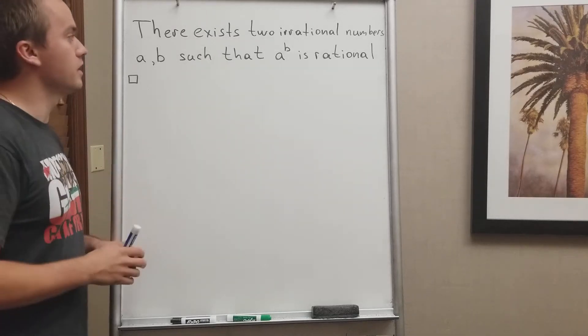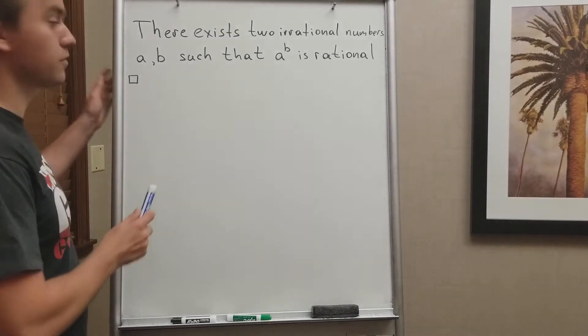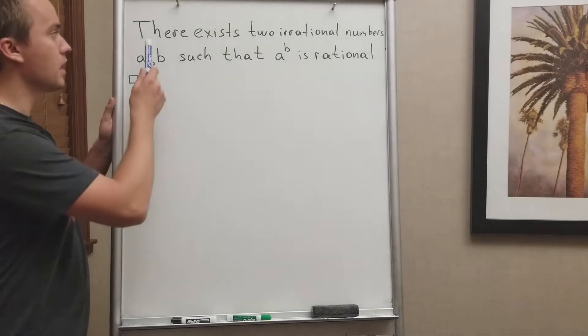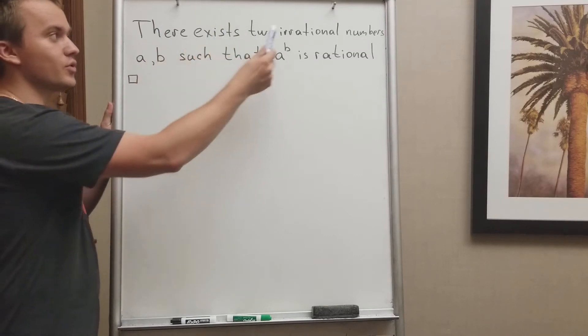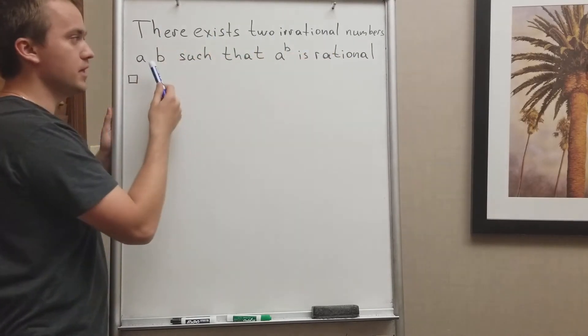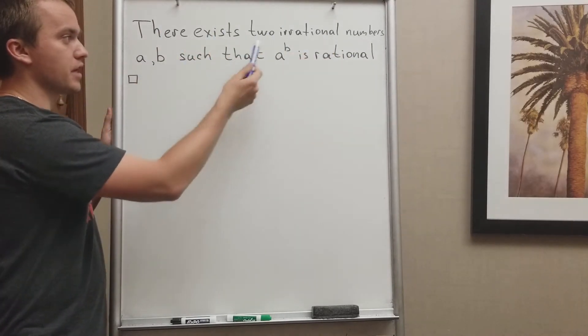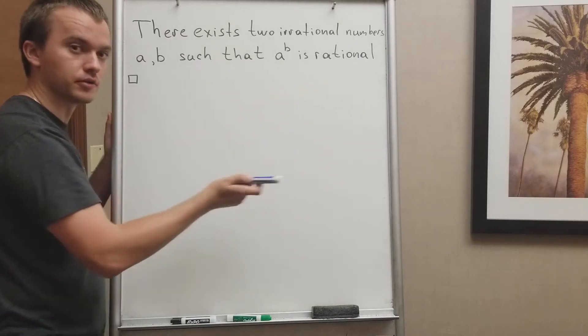Hello guys! In this video I want to prove the following problem. I want to show that there exist two irrational numbers a and b such that a to the power of b is going to be rational.